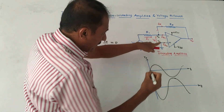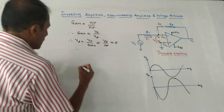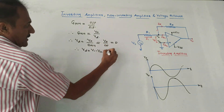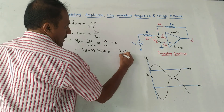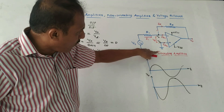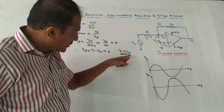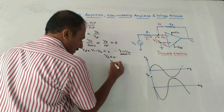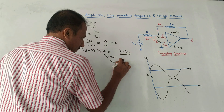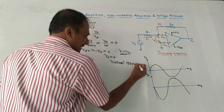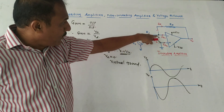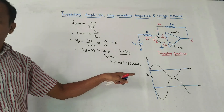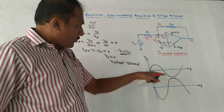Since Vd is the voltage difference between positive and negative terminals, and V1 is the voltage at the positive terminal while V2 is at the negative terminal, we have Vd = V1 − V2 = 0, therefore V1 = V2. Looking at the diagram, V1 is connected to ground, so V1 = 0. Since V1 = V2, we can say V2 is also equal to zero. This concept is called the virtual ground concept.